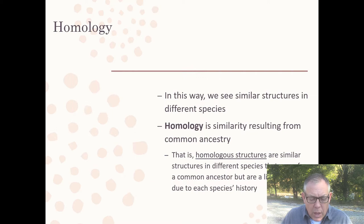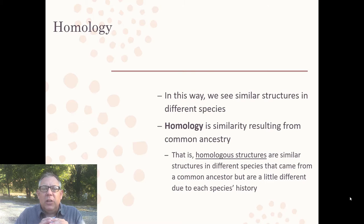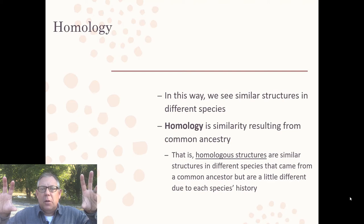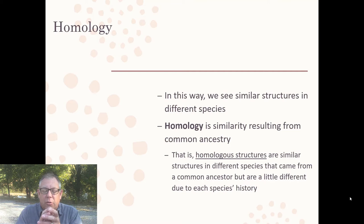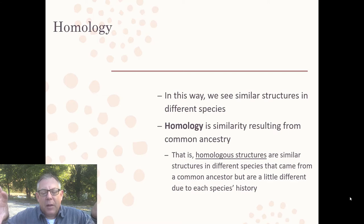In this way we see similar structures in different species, but sometimes those structures have very different functions. That's because these species have a common ancestor. Homology is similarity arising from common ancestry. Homologous structures are structures in two different species that are similar but have different usage — because the common ancestor had that structure and passed it on, but different environments caused it to be modified by natural selection.